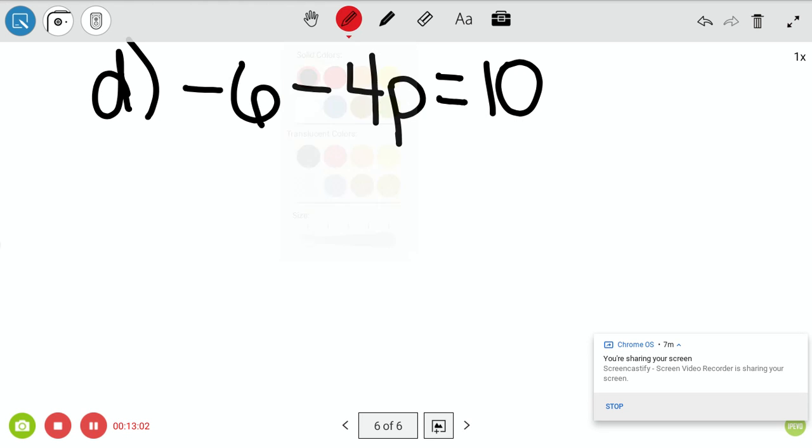So this is the one I want you to try by yourself. Negative 6 minus 4P equals 10. Alright, so at this point, hit pause. Start working. Alright, and for the solution, hopefully you've hit play by now.